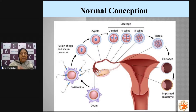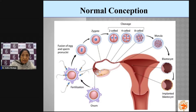As the zygote continues dividing into a clump of cells it is called a morula. This then gets divided into two parts: one is the inner cell mass — which forms the baby — and the circular outer layer forms the placenta. This stage is called the blastocyst.